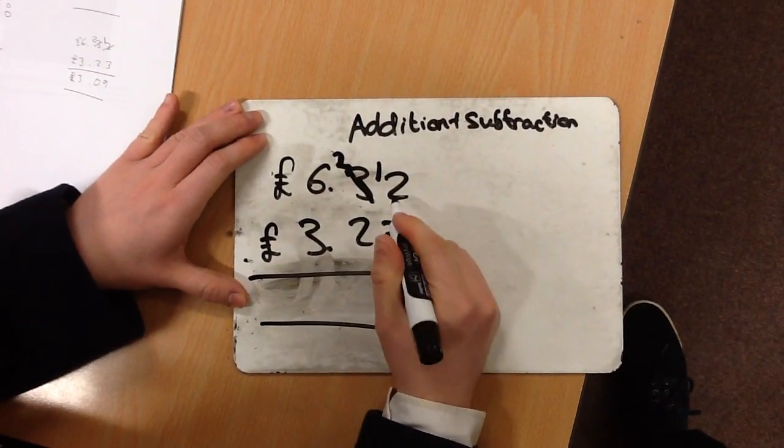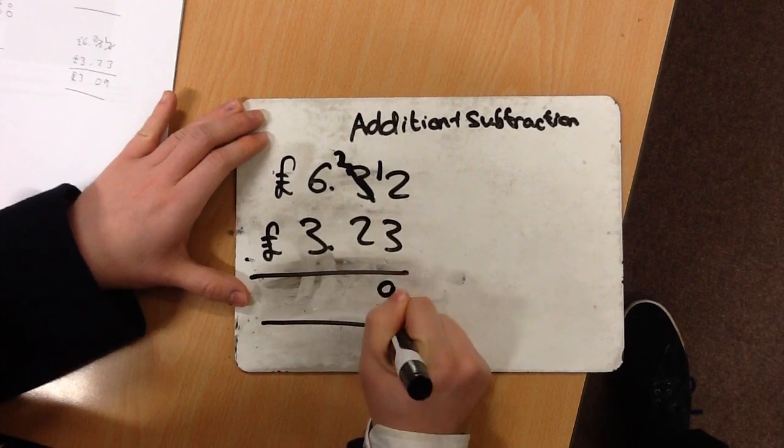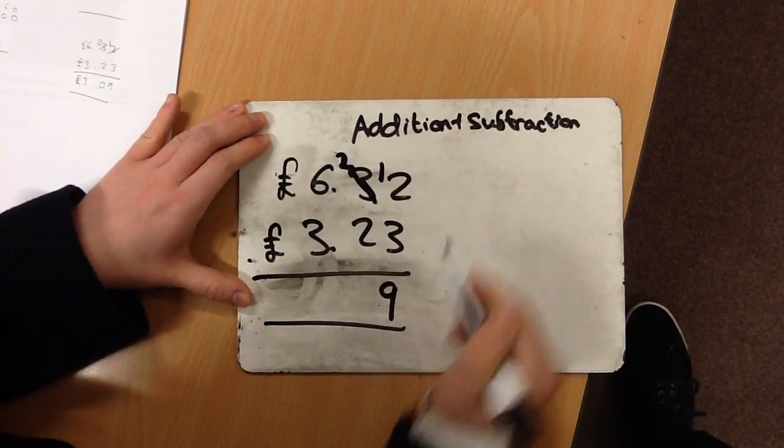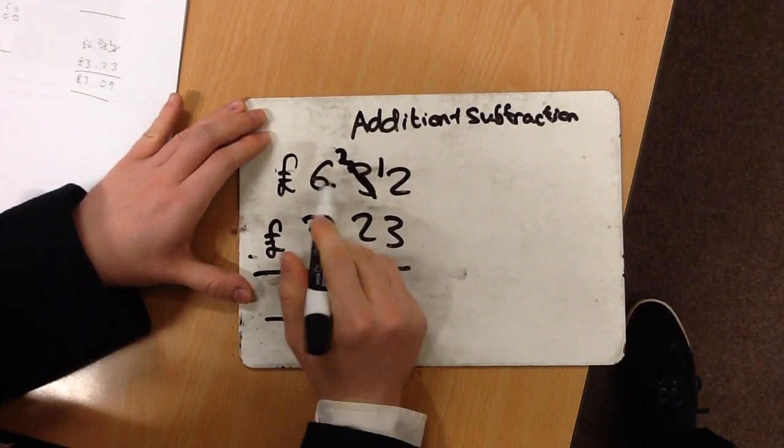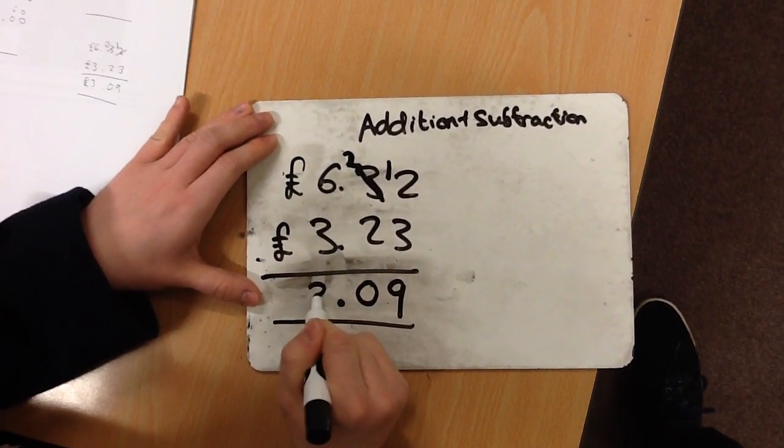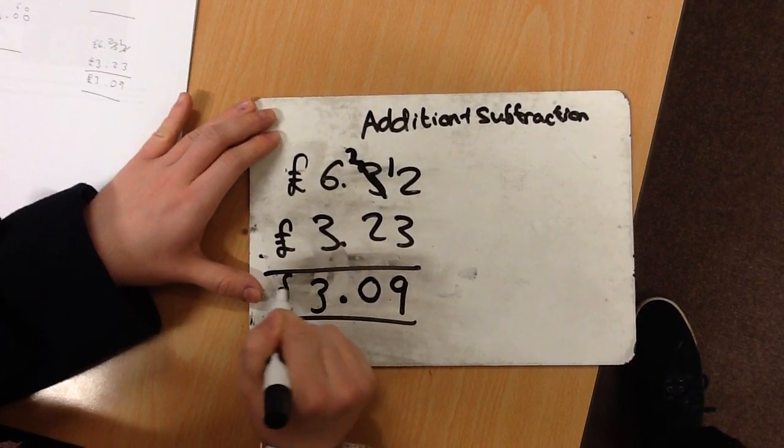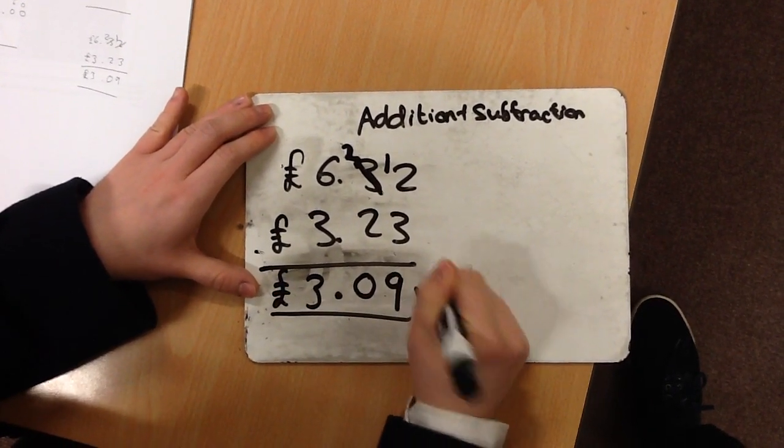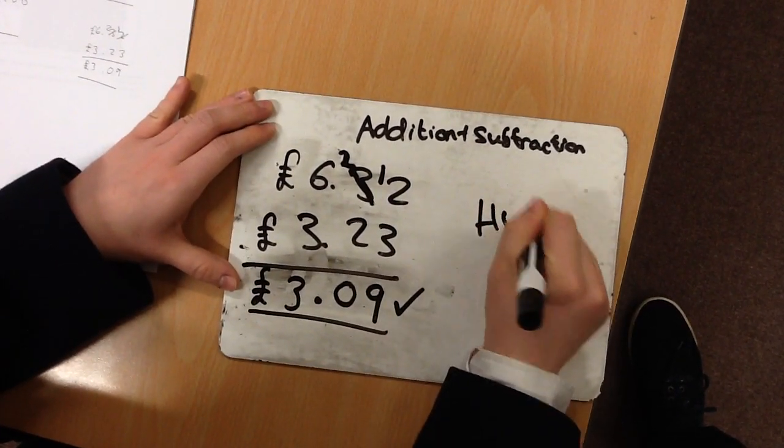We've now got £12 take away £3, which is £9. £20 take away £20, which is £0. The decimal point goes in the same place. And £6 take away £3, which is £3. Line up the pound sign and there it is. You can now do your homework. Well done.